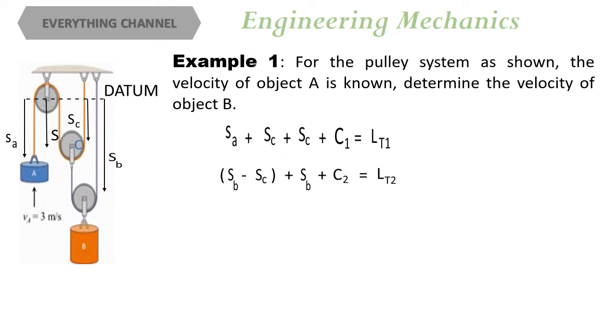And now we can combine these two equations by canceling out the middleman and get SA plus 4 times SB equals total constant length.